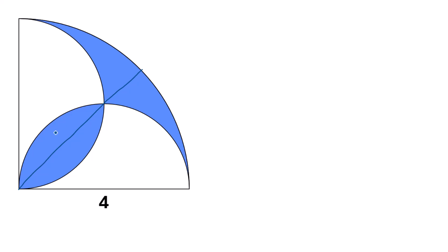Consider this green region as x — these two regions are equal, so this will also be x. Consider this green region as y — these two are similar, so this will also be y. And the area of this white region is z, so similarly this will also be z.